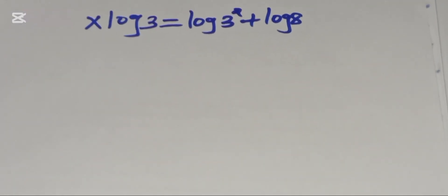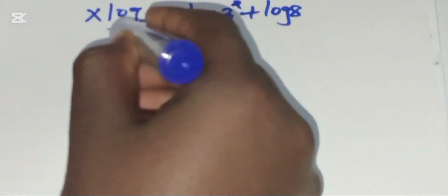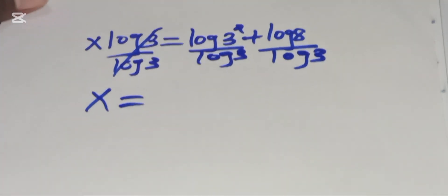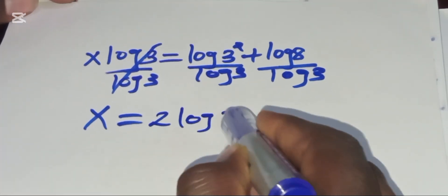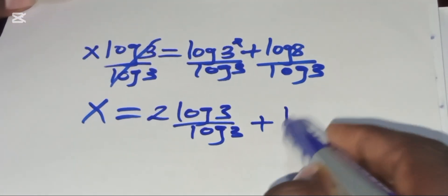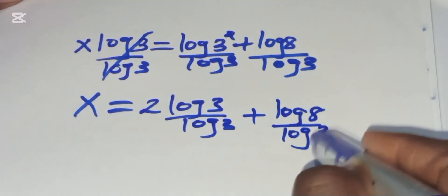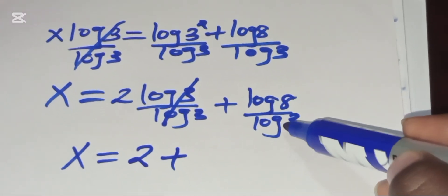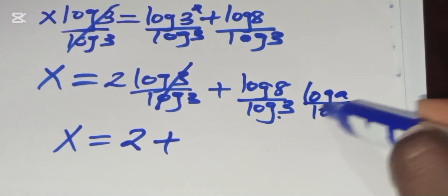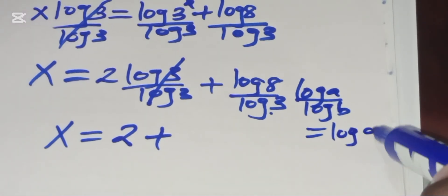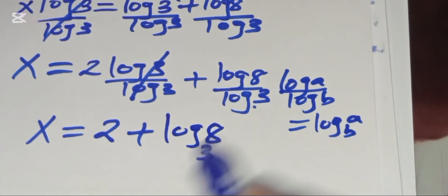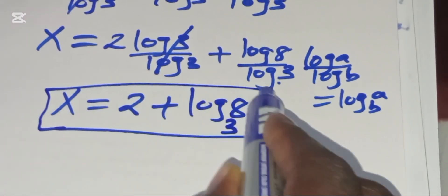So we have x log 3 equals log 3 squared plus log 8. Now divide both sides by log 3. From what we have here, x equals log 3 squared divided by log 3, plus log 8 divided by log 3. Now log 3 squared can be expressed as 2 log 3 divided by log 3, which simplifies to 2. So x equals 2 plus log 8 divided by log 3, which is in the form log a divided by log b — that is, log 8 to base 3.